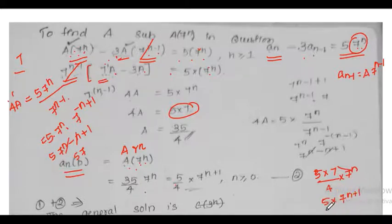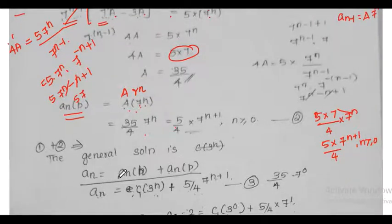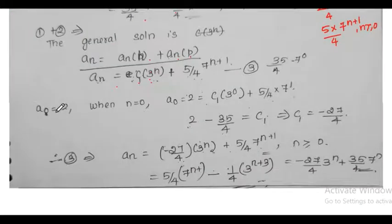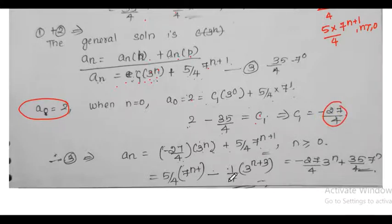So a(n)_p = 5·7^(n+1) / 4, where n ≥ 0. The general solution is a(n) = a(n)_h + a(n)_p = c1·3^n + 5·7^(n+1)/4. Applying the initial condition a(0) = 2: c1·1 + 5·7/4 = 2, giving c1 = 2 - 35/4 = -27/4. Therefore the final answer is a(n) = (-27/4)·3^n + 5·7^(n+1)/4.